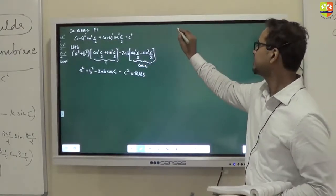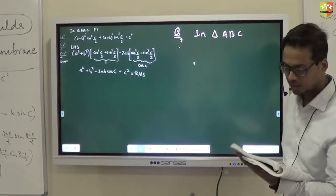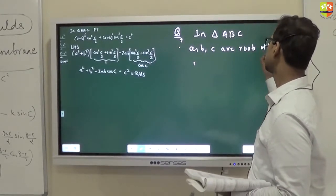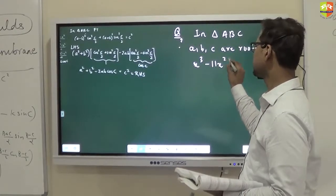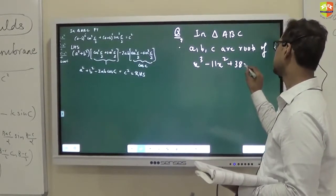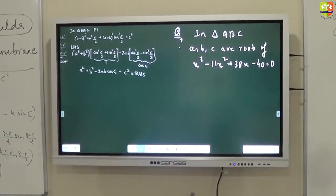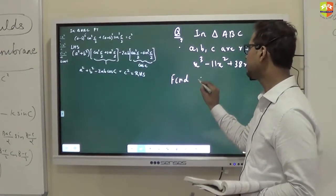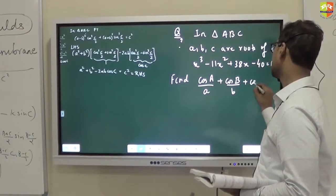Next problem. In triangle ABC, if the sides a, b, c are roots of the equation x³ - 11x² + 38x - 40 = 0, then find the value of cos A/a + cos B/b + cos C/c.